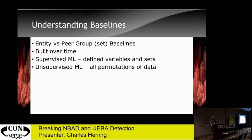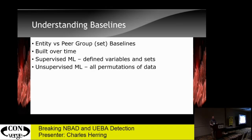In doing anomaly-based detection, you have to build baselines — another way of saying that is the baseline is the calculation of normal. What is the normal time a user or set of users should be logging in? It takes time to build these. The longer the baseline exists, the more reliable it is. Supervised machine learning looks at very specific data points and builds metrics on those data points over time. Unsupervised machine learning looks at all permutations of data to find new and different calculations we didn't know before.